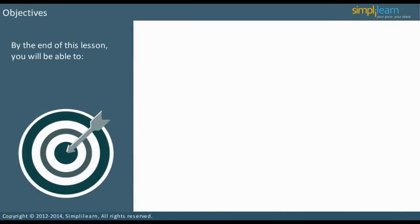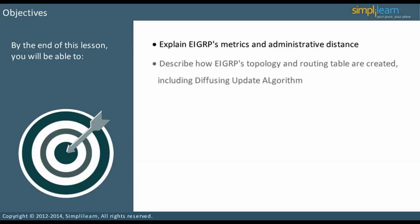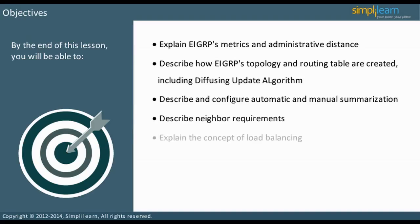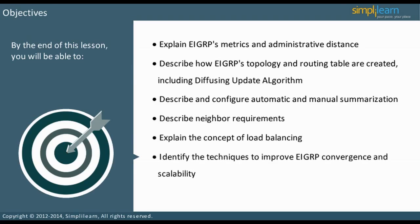By the end of this lesson, you will be able to: explain EIGRP's metrics and administrative distance; describe how EIGRP's topology and routing table are created, including the Diffusing Update Algorithm; describe and configure automatic and manual summarization; describe neighbor requirements; explain the concept of load balancing; and identify techniques to improve EIGRP convergence and scalability.